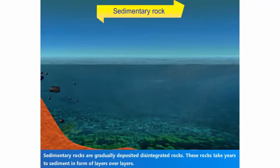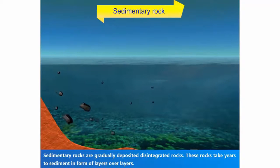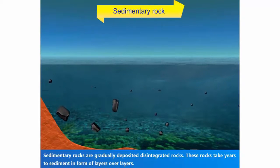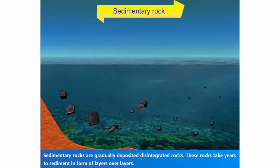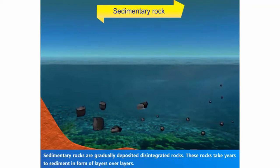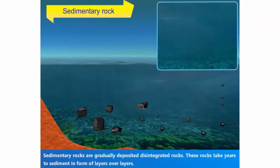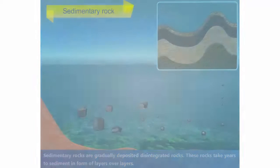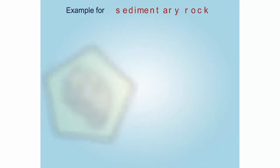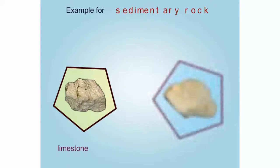Sedimentary rocks are gradually deposited from disintegrated rocks. These rocks take years to sediment in the form of layers over layers. Let us see the example for sedimentary rocks.